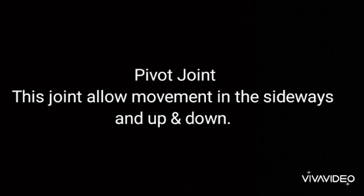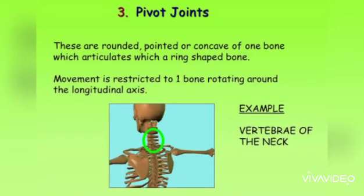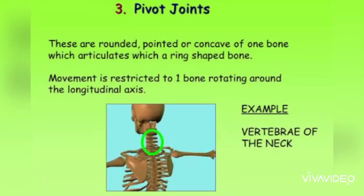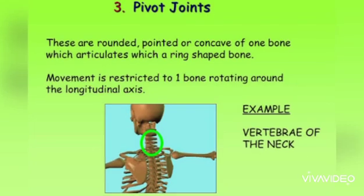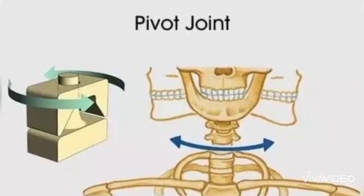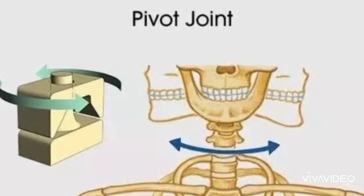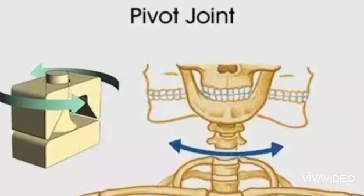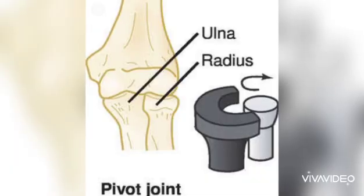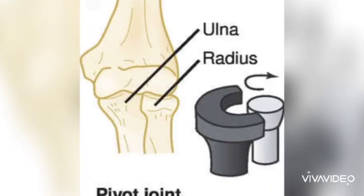The pivot joint allows movement sideways and up and down. Its movement is restricted to one bone rotating around the longitudinal axis. For example, when you move your neck side to side and up and down, that is the pivot joint allowing that movement.